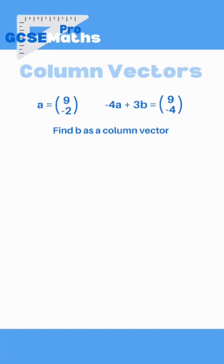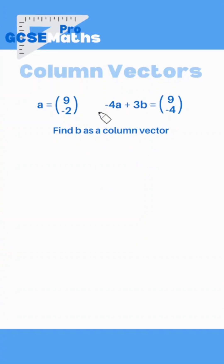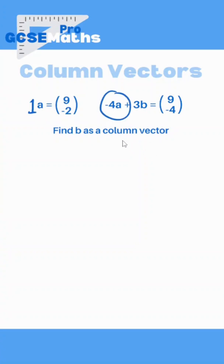We've got a slightly more complex question here. We want to do some unpicking — we're going to reverse it. First of all we want to work out b, but we don't know what b is so let's focus on a. If we know that 1a is (9, -2), what about -4a? Let's just work that out first.